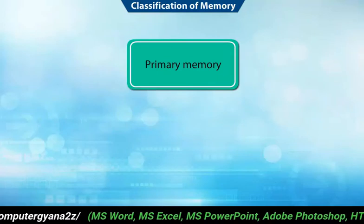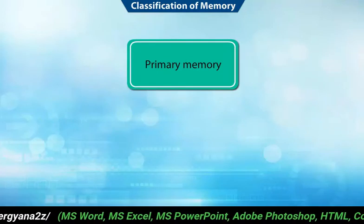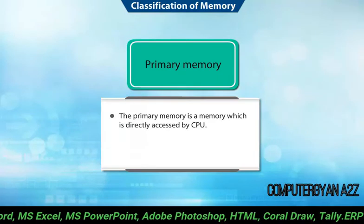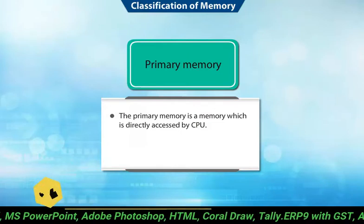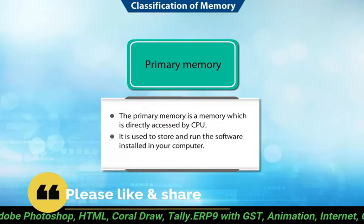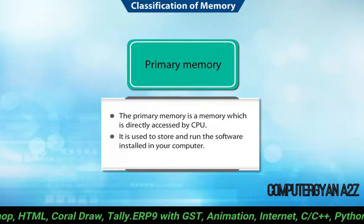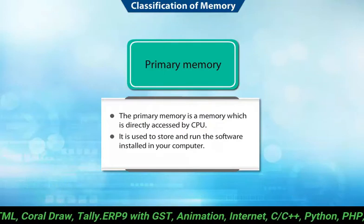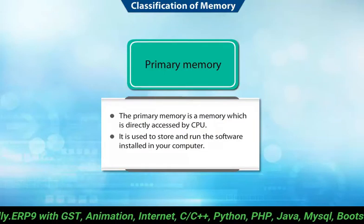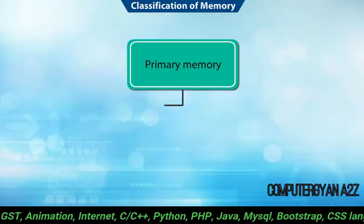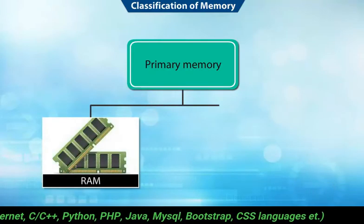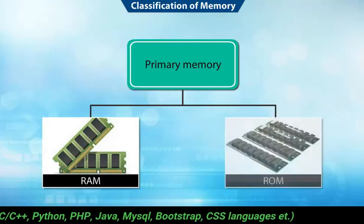The primary memory is one of the most important parts of a computer. Primary memory is directly accessed by the CPU. It can be used to store and run the software installed in your computer. Primary memory is classified into two types: RAM and ROM.